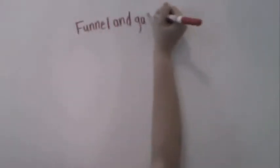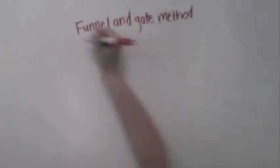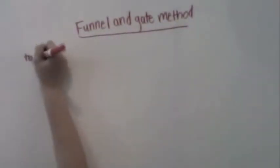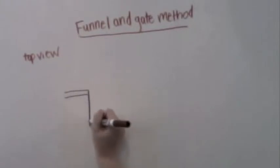The second type is the funnel and gate method. This involves low permeability walls which act as a funnel and directs the groundwater into the treatment zone.